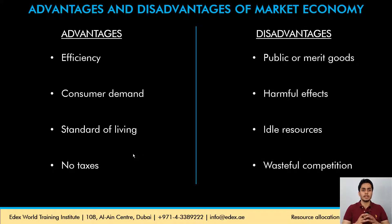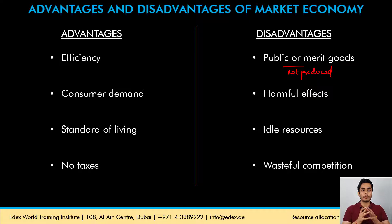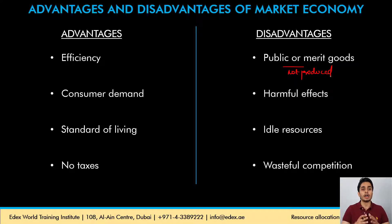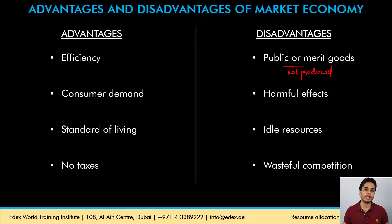Talking about the disadvantages of a market economy: public and merit goods are not produced. Public goods are non-rival and non-excludable, so a price cannot be charged for them and no private player would be interested in producing them — yet these goods are important for society. Merit goods are also underproduced or under-consumed in a market economy, even though they are very important from a social welfare point of view. This is a significant disadvantage of the market economy.